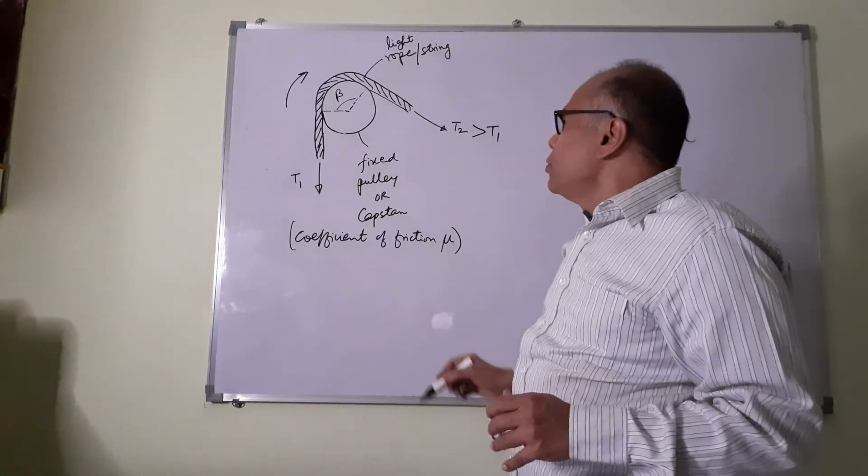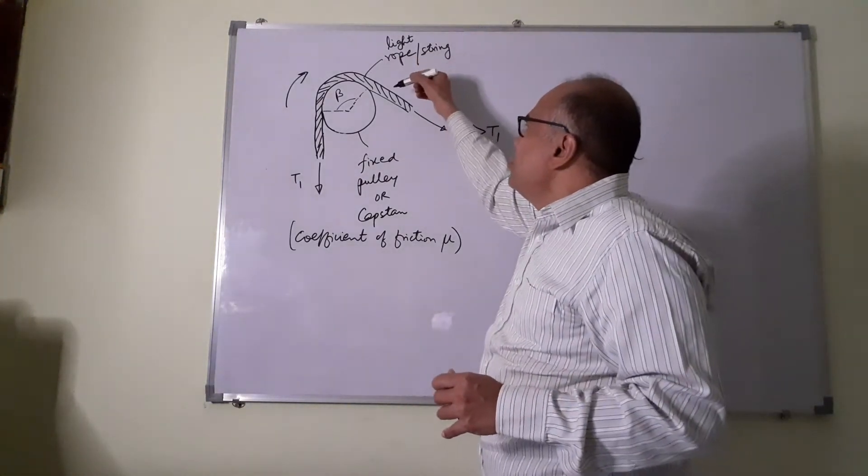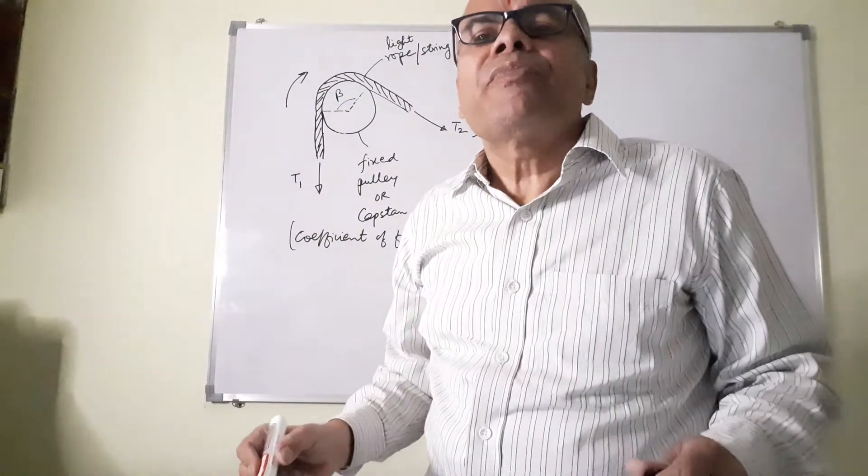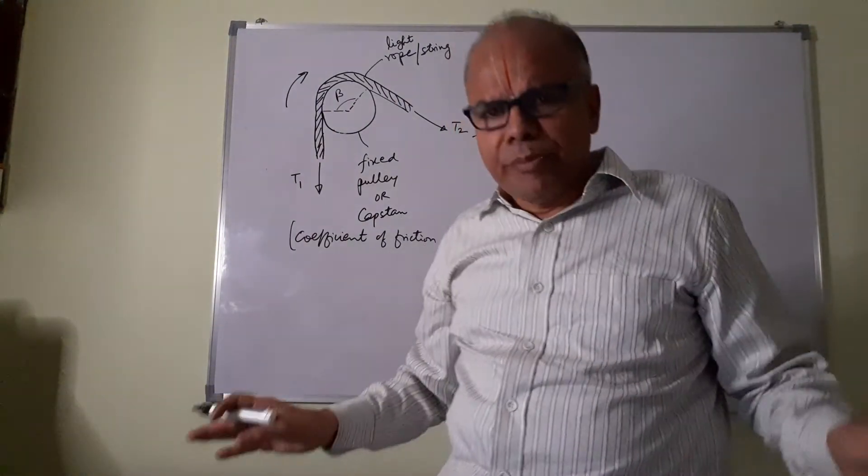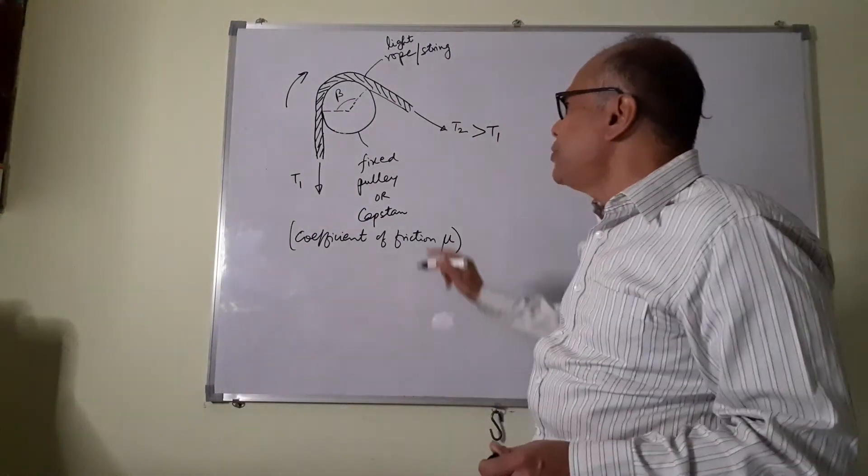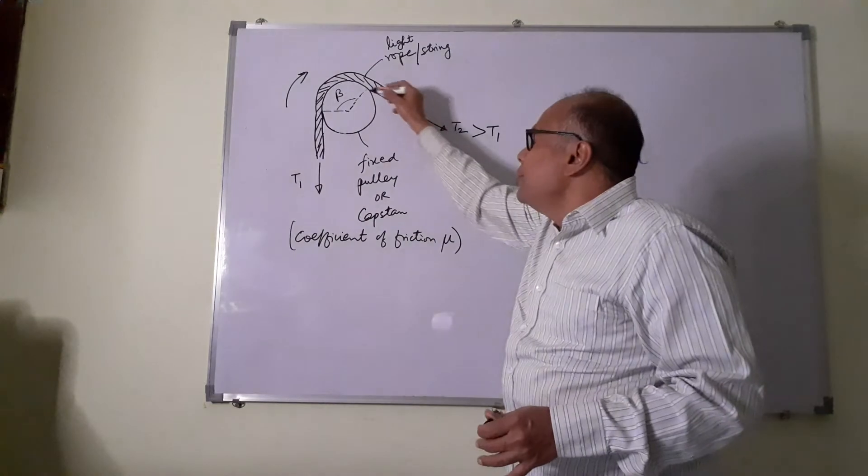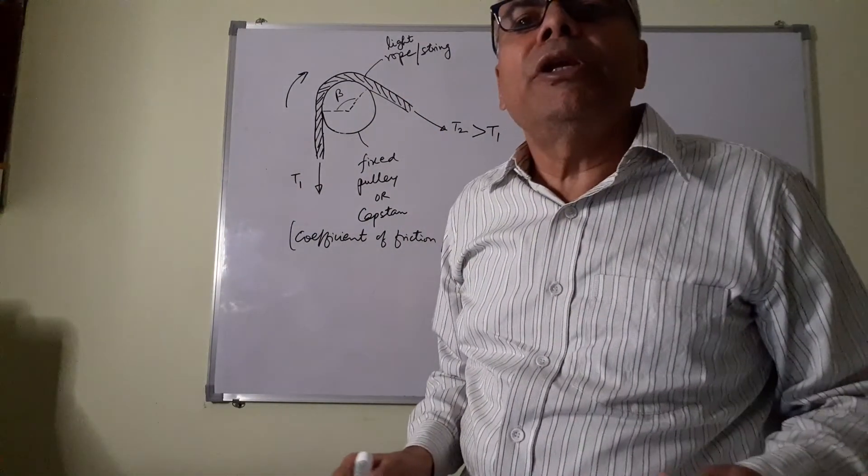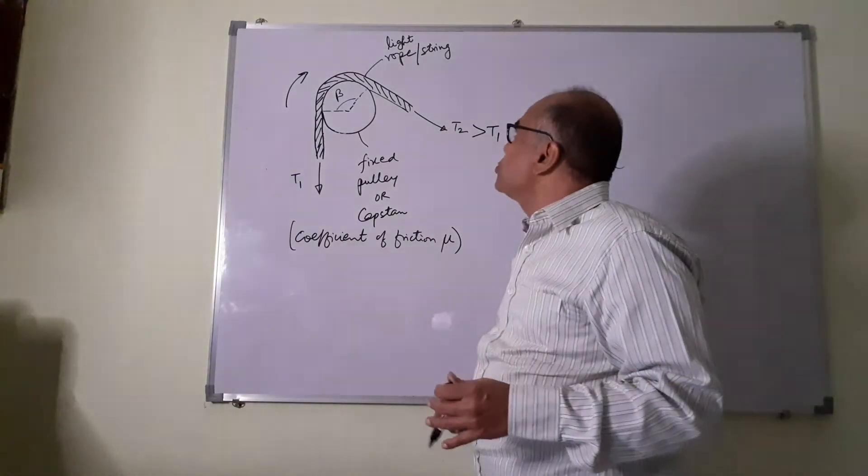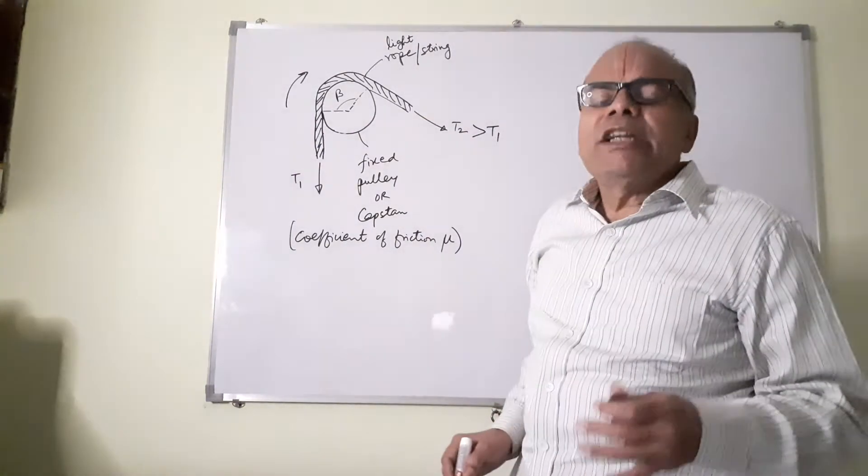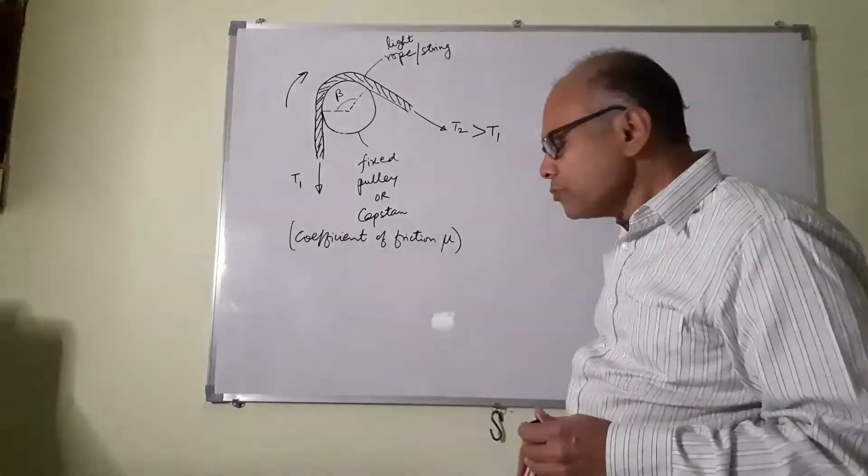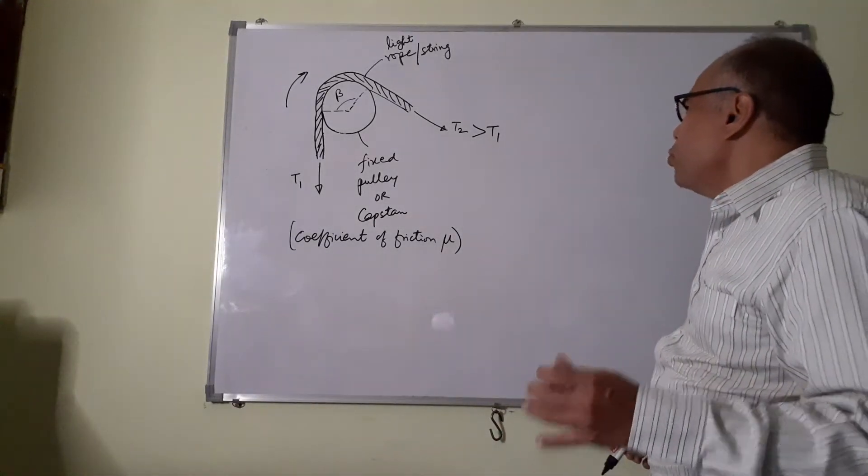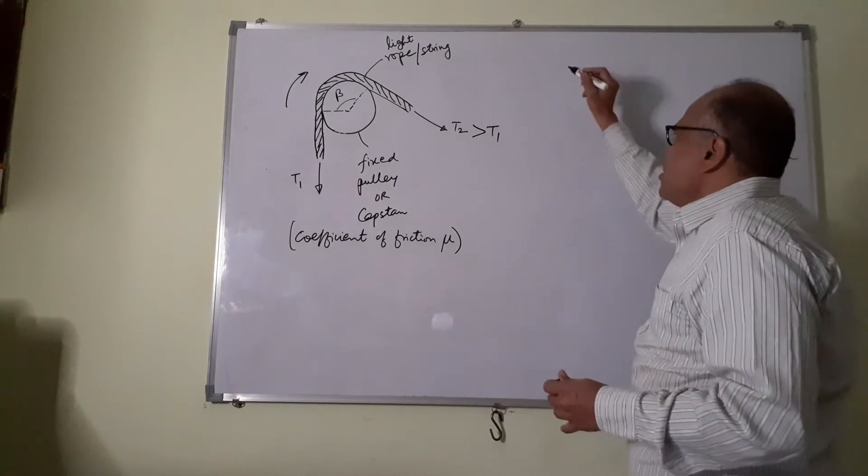Now, the string or the rope, because it is light, it must necessarily slip. However rough the pulley may be, the contact surfaces of the pulley and the rope may be, because the rope or string is light, it must necessarily slip.